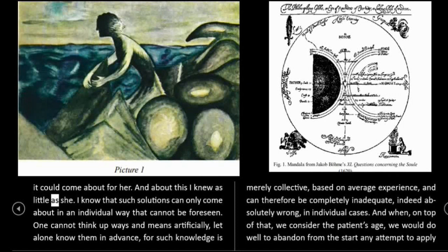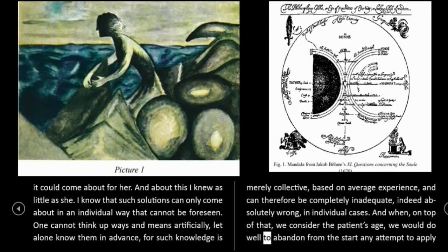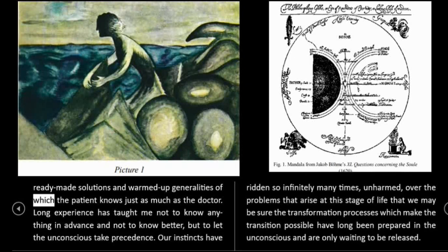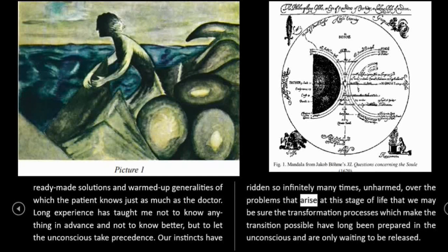She did not want to know how liberation might be possible in a general way, but how and in what way it could come about for her. And about this I knew as little as she. I know that such solutions can only come about in an individual way that cannot be foreseen. One cannot think up ways and means artificially, let alone know them in advance, for such knowledge is merely collective, based on average experience, and can therefore be completely inadequate, indeed absolutely wrong, in individual cases. And when, on top of that, we consider the patient's age, we would do well to abandon from the start any attempt to apply ready-made solutions and warmed-up generalities of which the patient knows just as much as the doctor. Long experience has taught me not to know anything in advance, and not to know better, but to let the unconscious take precedence.